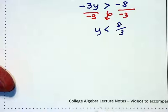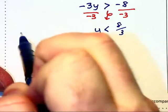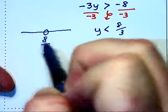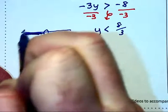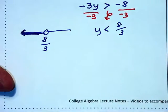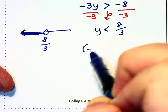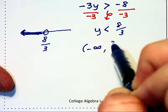And if we were to graph this on a number line, we would have an open circle at 8 thirds, with everything to the left of that shaded. And in interval notation, this is the interval from negative infinity to 8 thirds.